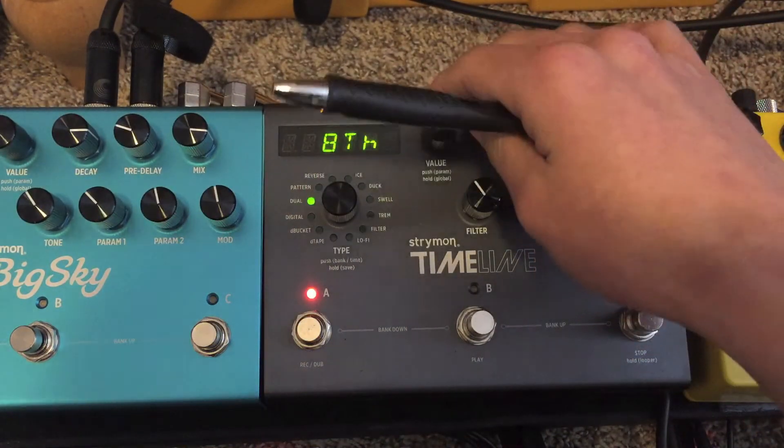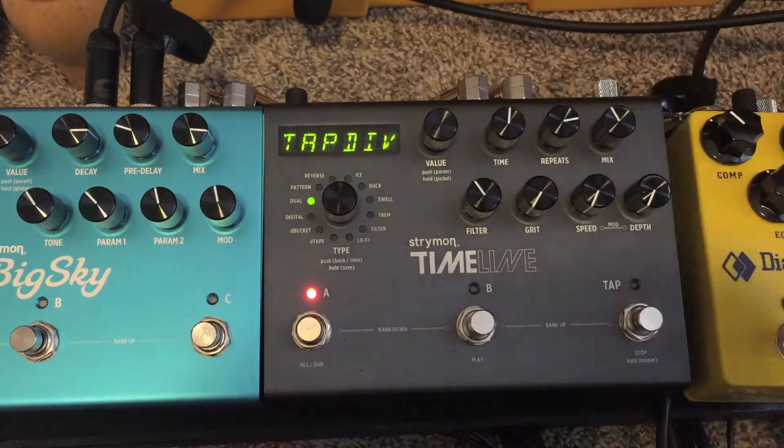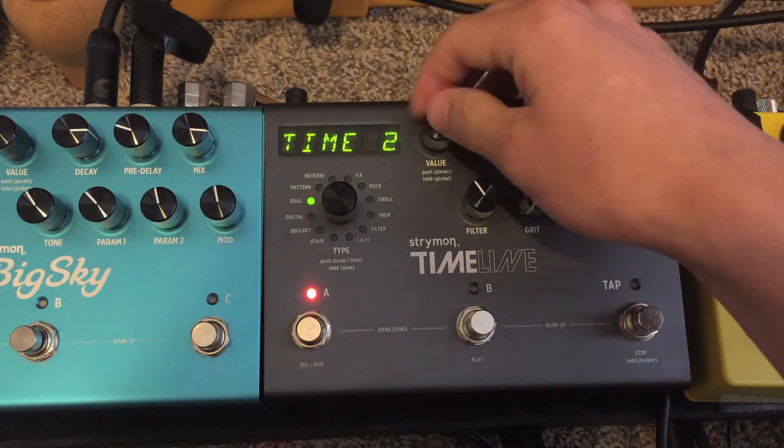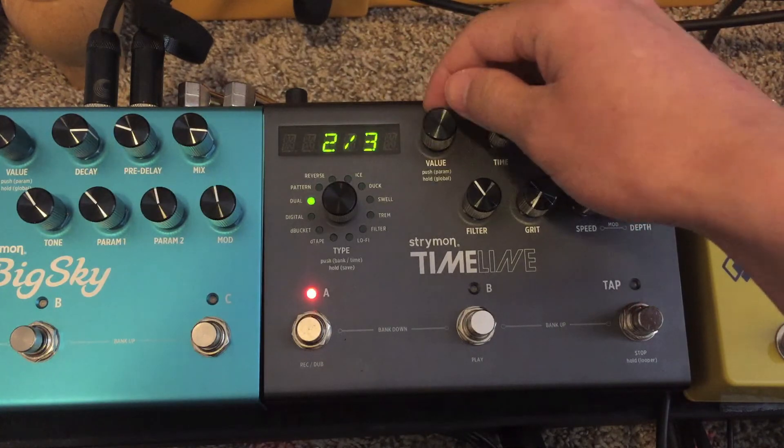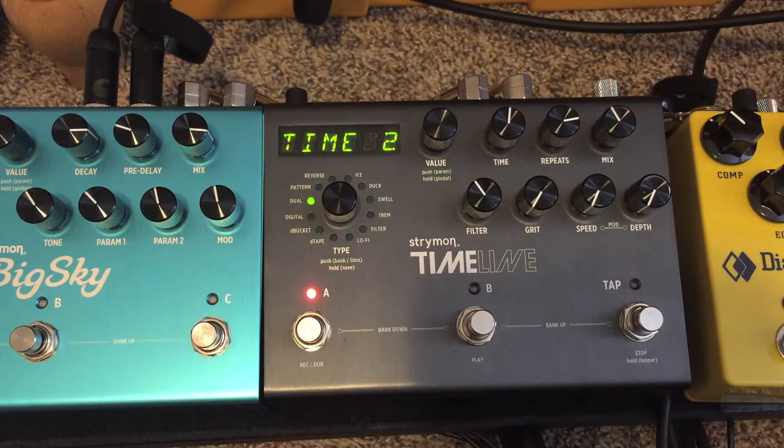So tap division, I have that set to dotted. And my time two, if I set to two thirds, get my guitar. It should be the same thing, but reversed.